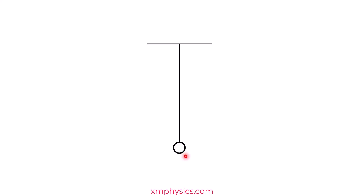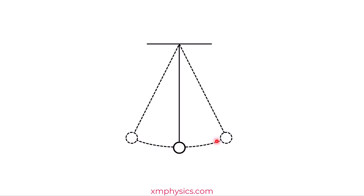This is a pendulum sitting at its equilibrium position, and this shows a pendulum swinging doing simple harmonic motion between its two extreme positions. I have a question for you: how long does it take for the pendulum to swing from this extreme position to the half amplitude position? This is the amplitude, so this is exactly half the amplitude.